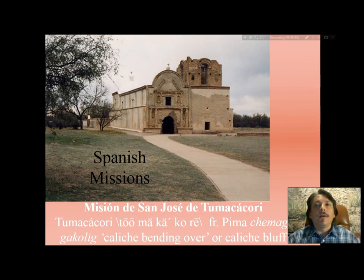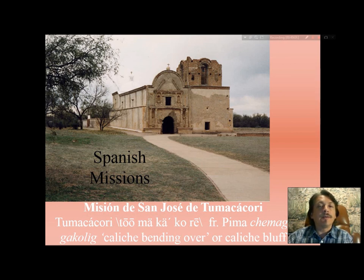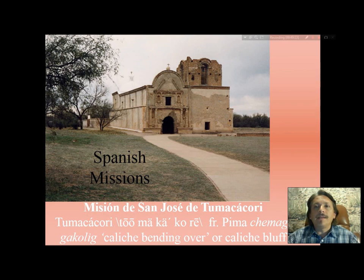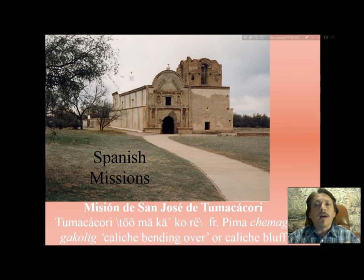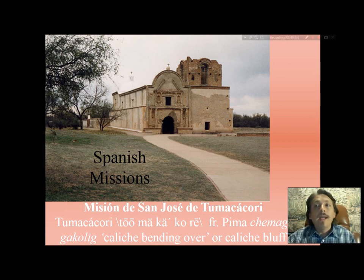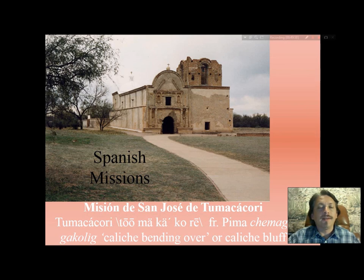Spanish missions were established to assist in the conversion of American Indian people to Roman Catholicism. The Jesuits worked in Arizona, then called the Pimería Alta, and along the Rio Grande Valley the Franciscanos, or Franciscans, worked. As the Spanish had outlawed expeditions of conquest after 1573, the driving force became the diffusion of Roman Catholicism into El Norte Mexicano. Old Spanish churches are a defining symbol in all the borderland states with Mexico. One in particular is south of Tucson, Arizona — called Tumacácori, a Pima word meaning kaliche bluff.